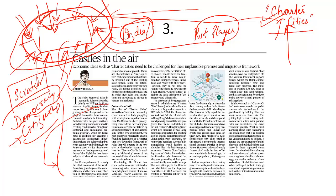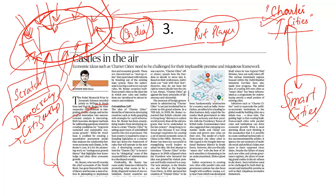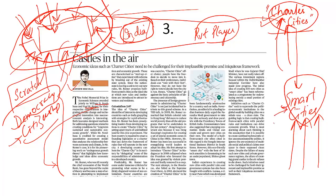How are charter cities different from smart cities? Smart cities in India are different — cities already exist and we enhance facilities to make them smart: better waste disposal, better infrastructure. Charter cities are developed from scratch. Smart cities remain within India's sovereignty, whereas charter cities are beyond the control of the nation.